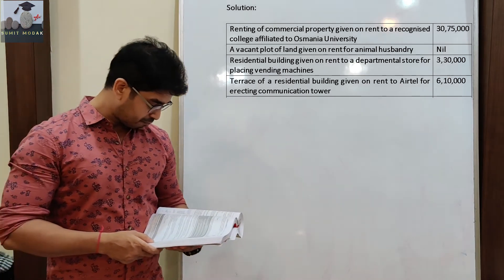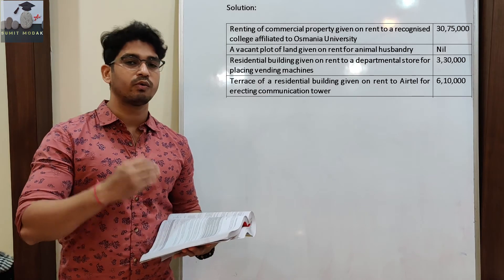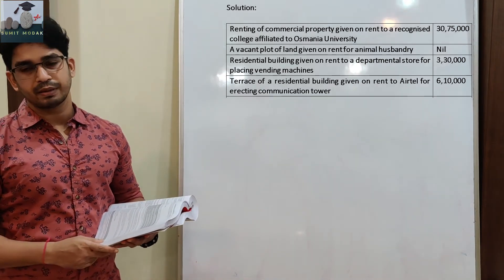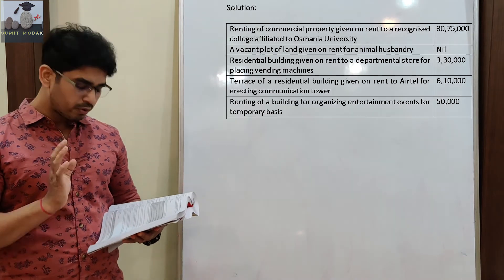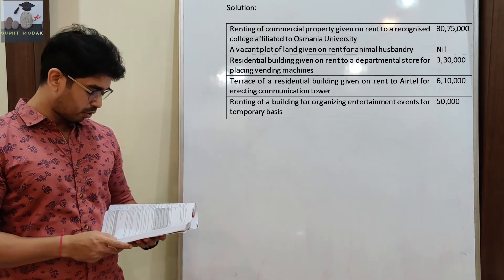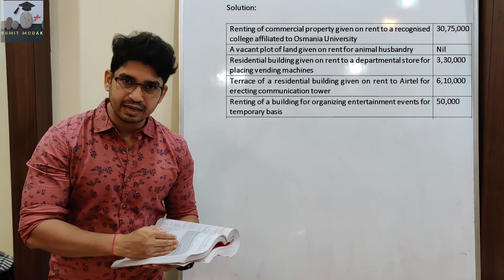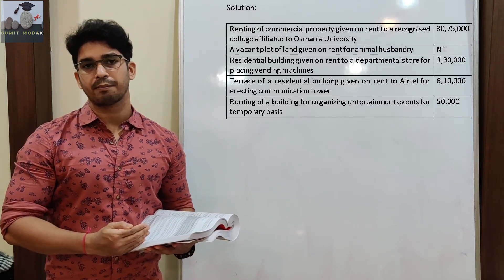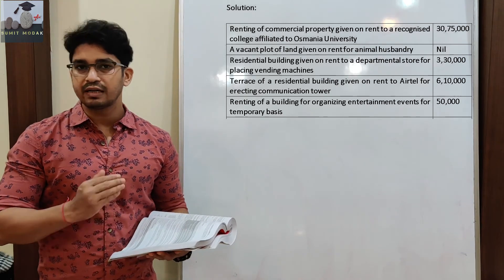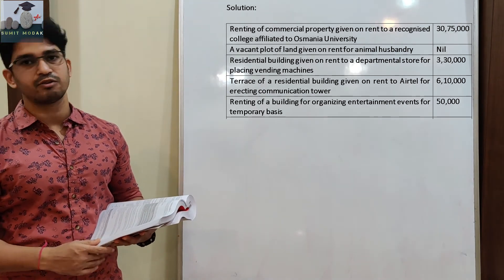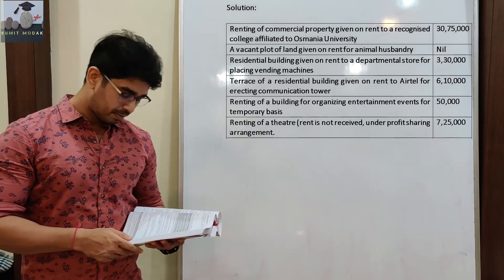Rent of building for organizing entertainment events — chargeable to tax even if used for temporary basis। अगर आप अपने building को temporary basis में entertainment purpose के लिए rent करवा रहे हैं और उसके लिए rent collect कर रहे हैं, it is chargeable to GST, चाहे वो permanent हो या temporary हो। So, Rs. 50,000 is coming to the outer column. Rent of theater — theater is a commercial activity। आप चाहे rent collect करें या profit sharing का collection हो, that is collected for the purpose of making money from the theater, so वो rental activity ही हो गया। You are receiving share of profit in the name of rent, so वो आएगा outer column में — यह taxable supply है, Rs. 7,25,000।